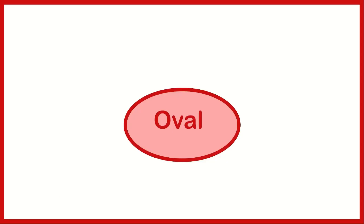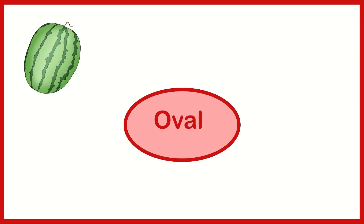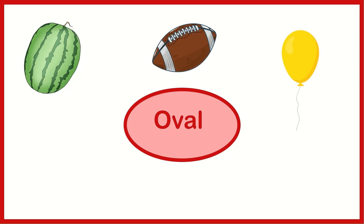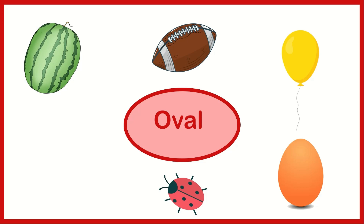Our next shape is an oval. Let's look at some examples of ovals. A watermelon looks like an oval. A football kind of looks like an oval. A balloon looks like an oval. An egg looks like an oval. A ladybug can look like an oval. And this mirror looks like an oval. Can you look around the room and see if you can find any ovals?